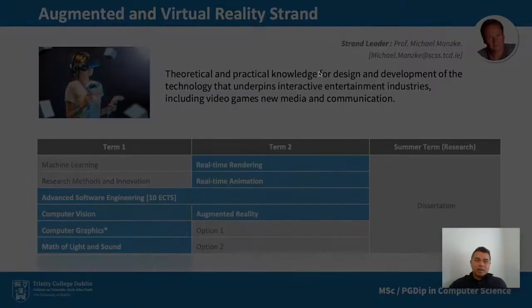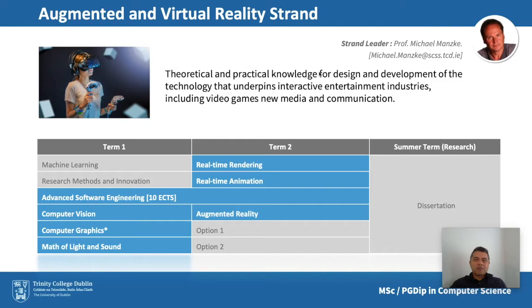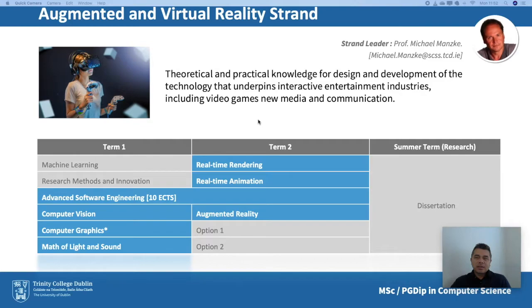The first strand is augmented and virtual reality. This strand deals with the theoretical and practical knowledge underpinning the digital entertainment sector — computer games, movies, animation — but also serious non-entertainment applications in domains such as engineering, science, and medicine. A key module is computer vision, which deals with acquiring digital images from the real world, and understanding, tracking, and analyzing information and images. This is relevant to visual effects and communication, but also applicable to areas like robotics, drones, and driverless cars.